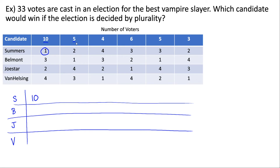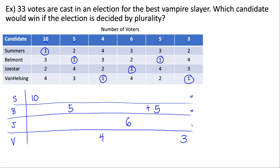In the next column, five voters all ranked Belmont first, so they'll be voting for Belmont. Next, four voters all ranked Van Helsing first, so that's who they're voting for. Then six voters all ranked Joestar first. Then five more voters ranked Belmont first, so they also vote for Belmont — those will be added to the previous five. And three voters ranked Van Helsing first, adding to Van Helsing's total.